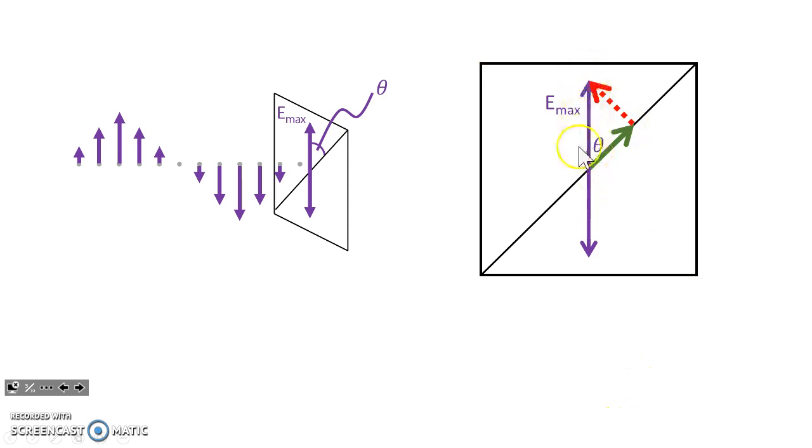So I've taken this electric field vector and I've broken it into components, one of which is parallel to the transmission axis and the other of which is perpendicular to the transmission axis. The parallel component of these oscillations pass through. The perpendicular component of the oscillations do not pass through. Green means go, red means stop.